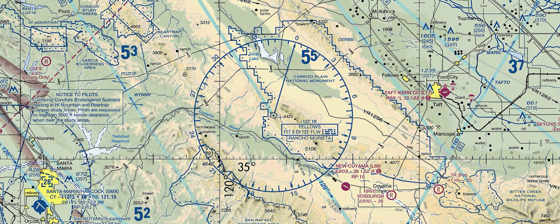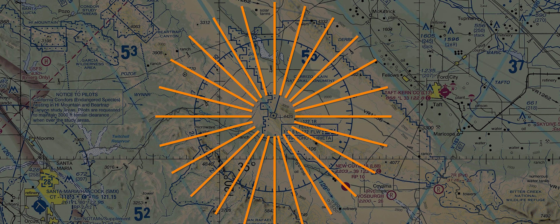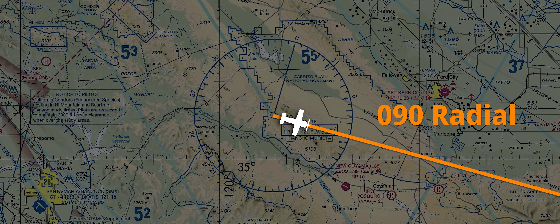So let's talk about how a VOR works in terms of navigating. The easiest way to think about VORs is to think about them as a giant wheel. The center of the wheel is the VOR itself, and the radio transmissions coming from the wheel are the spokes. There are 360 spokes radiating from the center, and we call each one a radial. You can think of each spoke almost like its own highway.